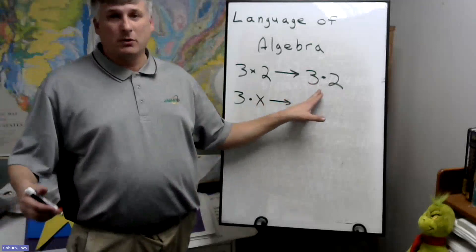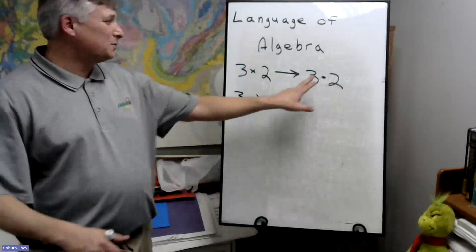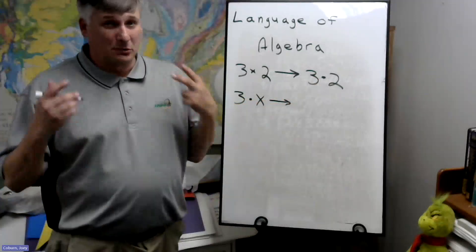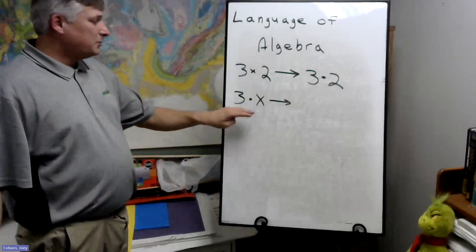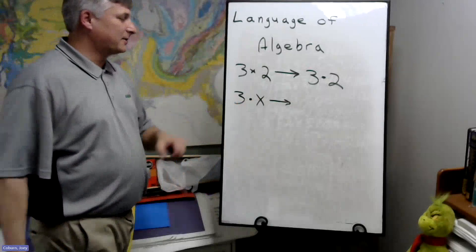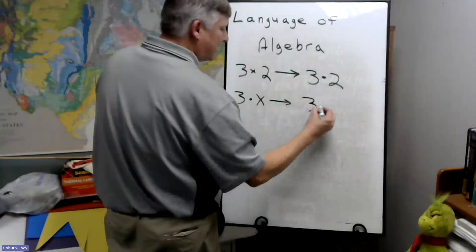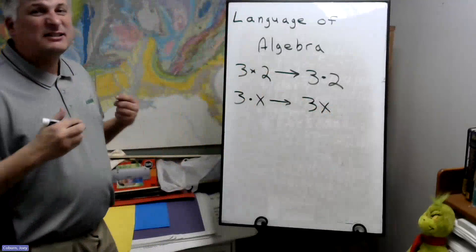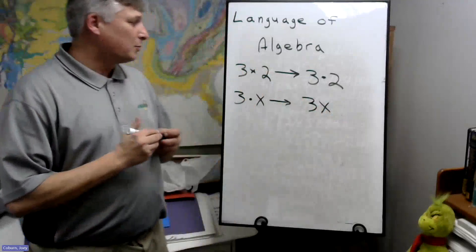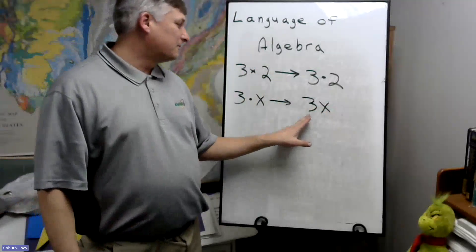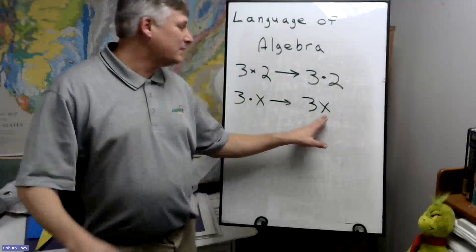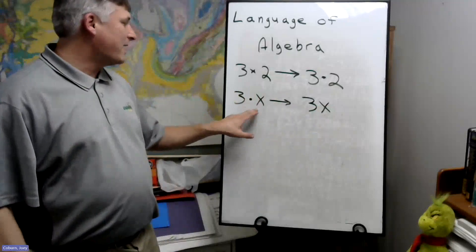But we even take a shortcut here. Now for numbers, we won't do what I'm about to do, because if we do this with numbers, things are going to go wrong. But what we'll do when you have a number times a variable, we write it without the dot. It's implied. So whenever you see a number in front of a variable like this, it means 3 times X.